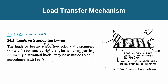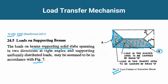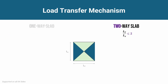As per IS 456-2000, to calculate loads on beams supporting solid slabs, you can use Figure 7. This figure shows that for beam B, the load is taken as a trapezoid at a 45-degree angle, while for part A, a different load shape applies. For a nearly square two-way slab, the load transfer in all four directions is triangular with 45-degree angles, and the Ly/Lx ratio is approximately equal to one.